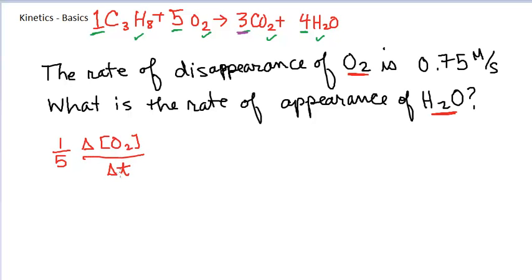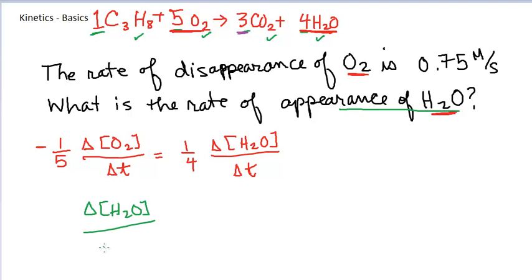One fifth of the change of oxygen with respect to time. There should be a minus sign out here. Again, don't get too hung up on the minus sign. None of my answers will be negative. This negative means that I'm multiplying by a negative 0.75 in order to make sure that the rate is positive. But one fifth times the change in oxygen, because that's the stoichiometric coefficient for oxygen, is equal to one fourth times the change for water. And so if I'm trying to solve for the rate of appearance of water, then I solve this equation for the delta H2O over delta T.